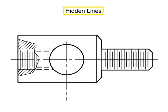Hidden lines consist of short dashes, evenly spaced. These lines are used to show the hidden features of a part. They begin with a dash in contact with the line from which they begin, except when such a dash would form a continuation of a full line.